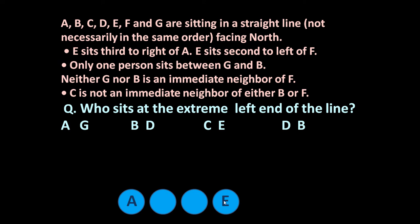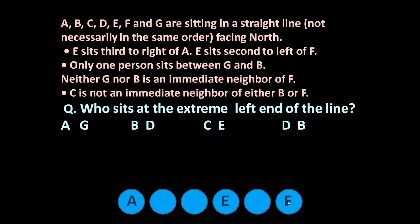E sits second to the left of F. It means F will occupy this position. This is the left side of F — 1, 2 — so E sits second to the left of F.